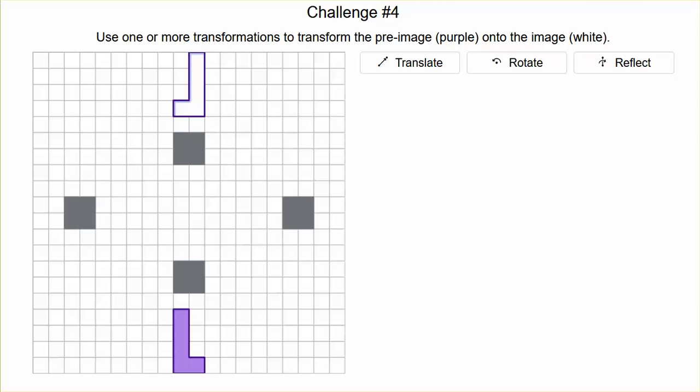On screen seven, we get to challenge number four. This one, we're definitely going to have to do multiple things to get our purple shape up to the white. There's not one single right answer. For example, maybe you want to translate and move it around the black boxes. I could translate left and then translate up, but I'd be pointed in the wrong direction. So I'd have to do a reflection.